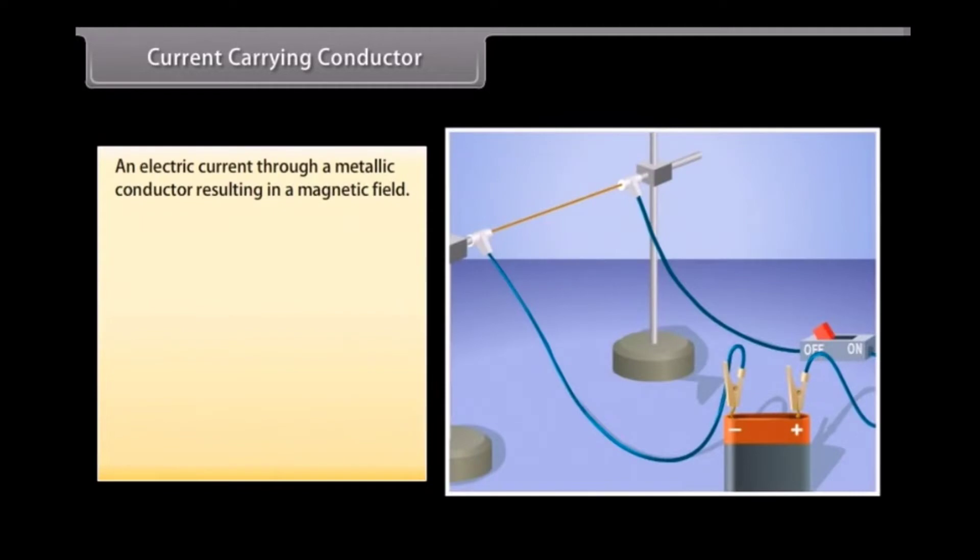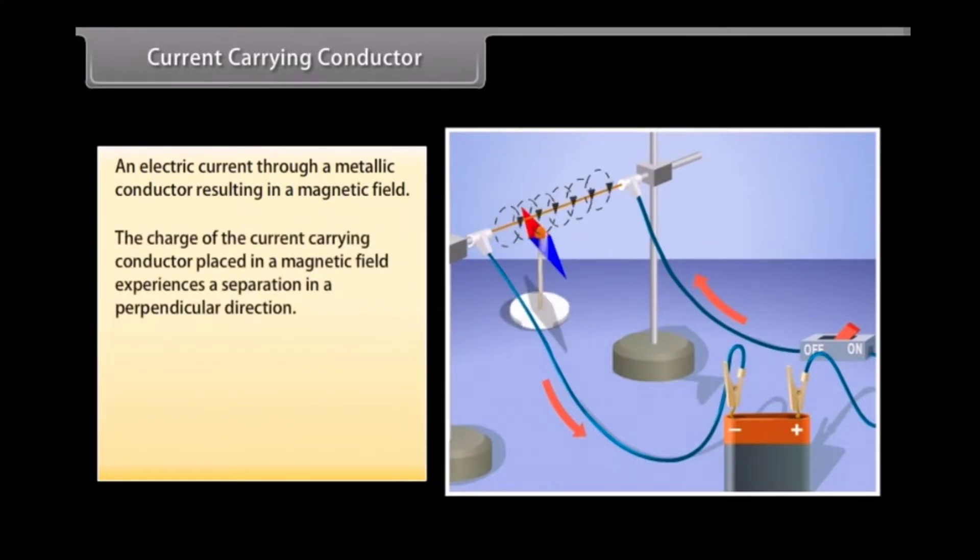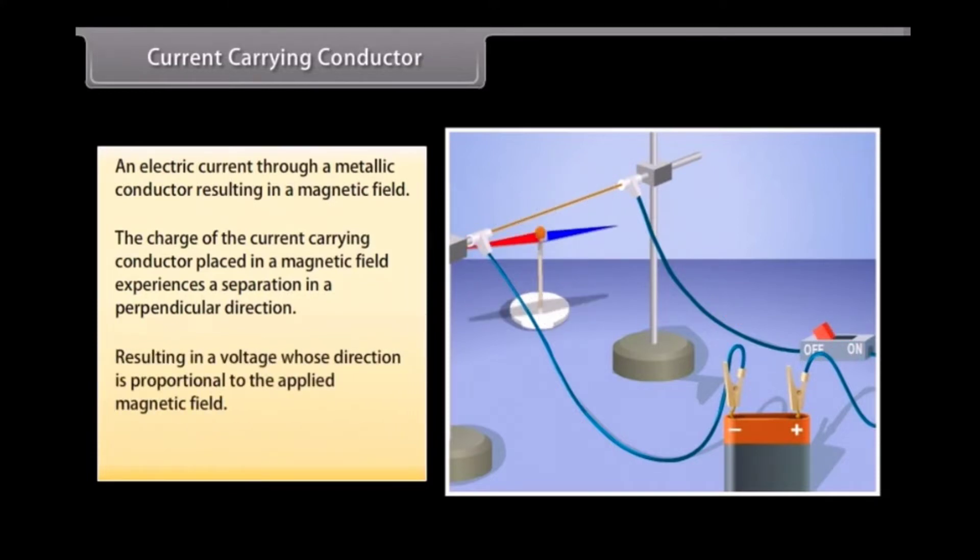Current-carrying conductor. An electric current passing through a metallic conductor results in a magnetic field being created around it. The charge of the current-carrying conductor placed in a magnetic field experiences a separation in a direction that is perpendicular to the current and the magnetic field. This results in a voltage whose direction is proportional to the applied magnetic field. This effect can also be reversed.